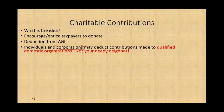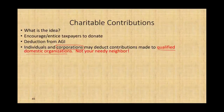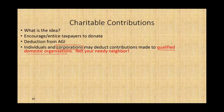Individuals and corporations may deduct contributions made to qualified domestic organizations. If you don't know what a qualified domestic organization is, go to the IRS and they will give you a list of all the organizations to which you can contribute and have your contribution deducted for tax purposes. If you give cash or clothing or anything to your needy neighbor, that's good, but it's not going to be deductible for IRS purposes — it has to go to a qualified domestic organization.